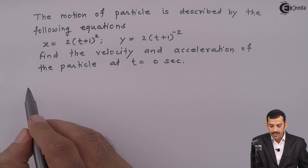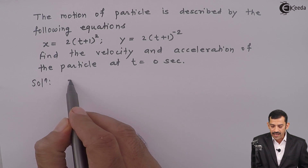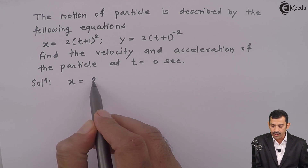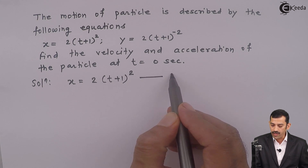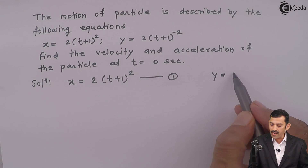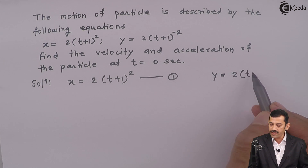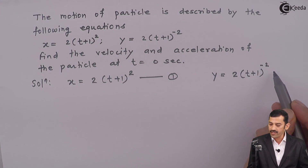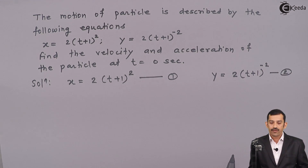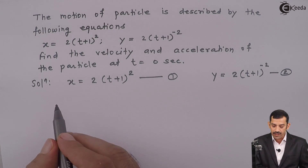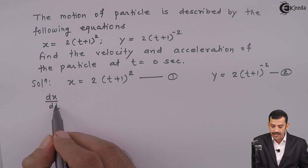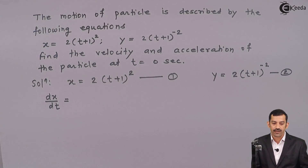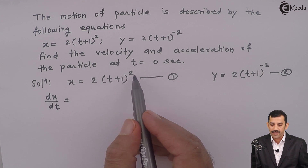The first step: equation 1 is x equal to (2t + 1) squared, and equation 2 is y equal to (2t + 1) raised to minus 2. Now if we differentiate equation number 1 with respect to time t, we get dx by dt. dx by dt represents the component of velocity along the x-axis. Differentiating (2t + 1) squared gives us 4(t + 1).